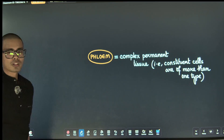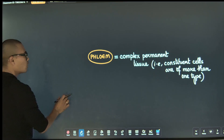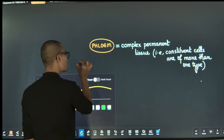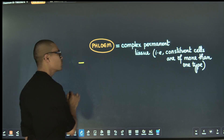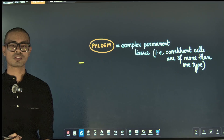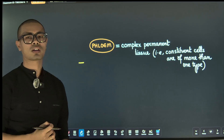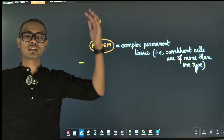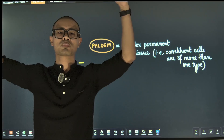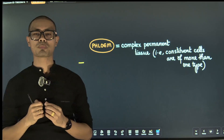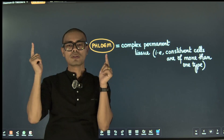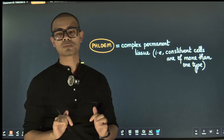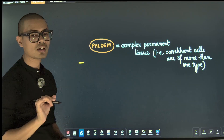The first point: phloem is responsible for food conduction. Especially, food prepared from the leaves is conducted to the roots, stems, and various parts of the plant. Food conduction.